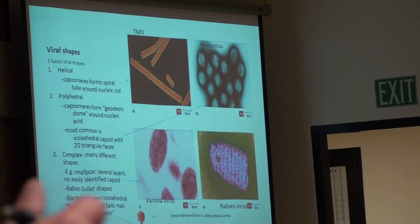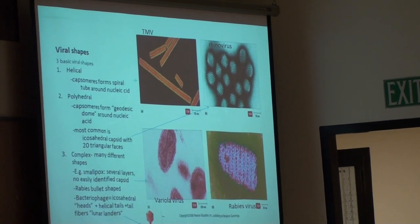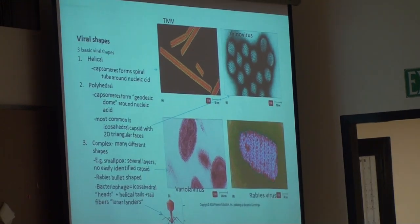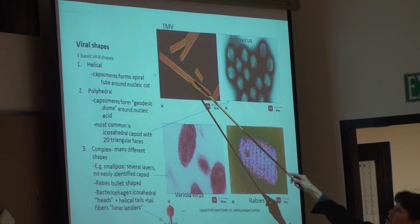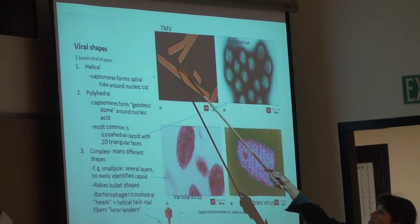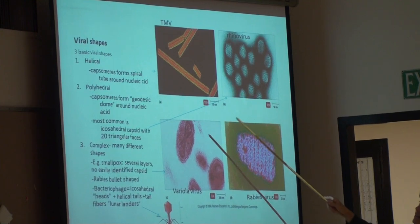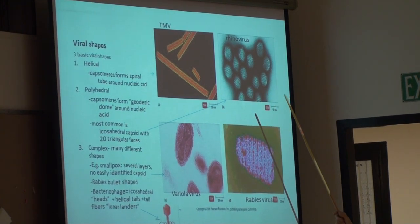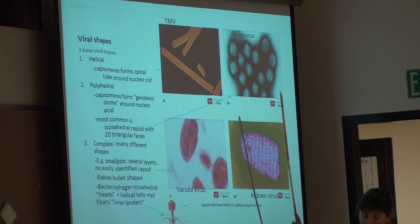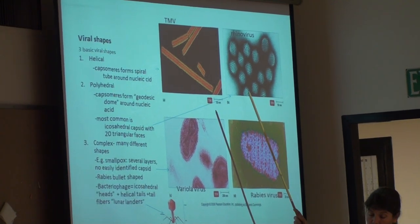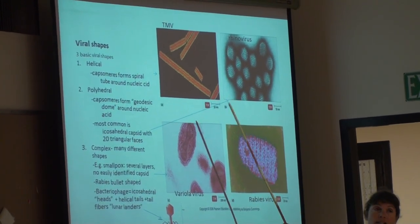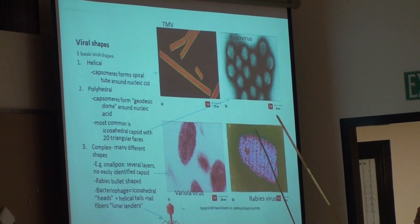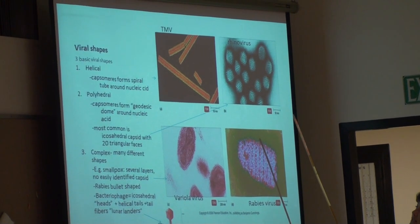Viral shapes are often determined by the shape of the capsid. We have helical capsids coating the genetic information, such as the tobacco mosaic virus. For polyhedral shapes, the most common is what's called an icosahedral — a polyhedral with 20 triangular faces.